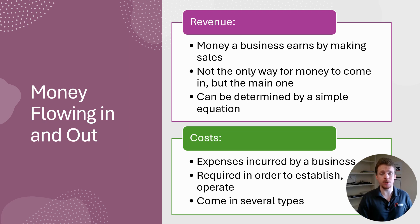If revenue is how money comes in, then costs are how the money goes out. Also known as expenses, costs are paid for by a business to establish itself and operate, paying for all the labor, materials, fees, and debts it requires to run itself and make sales. Costs come in several varieties, as we'll see later in the presentation.